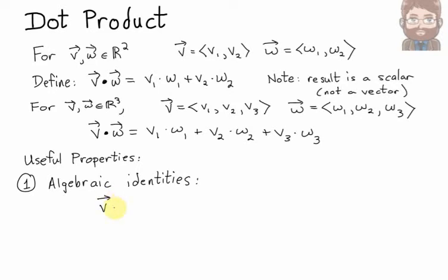For example, if you have vector V dot vector W, and then you switch the order vector W dot with vector V, you get the same answer either way. In other words, the dot product is commutative, which makes sense.